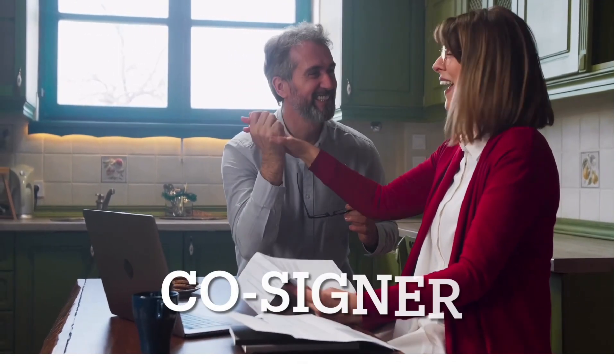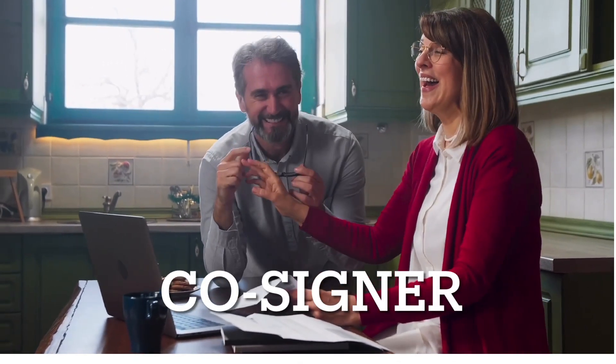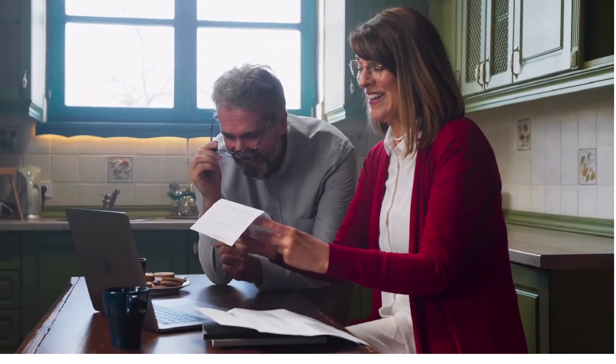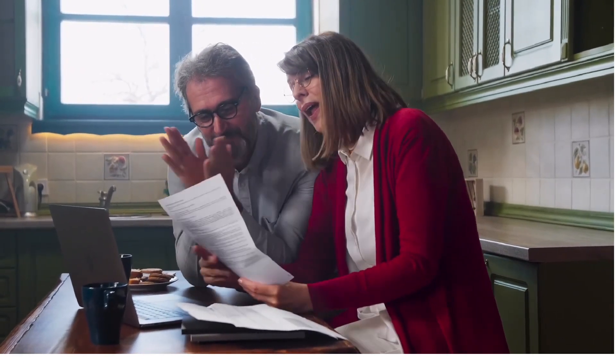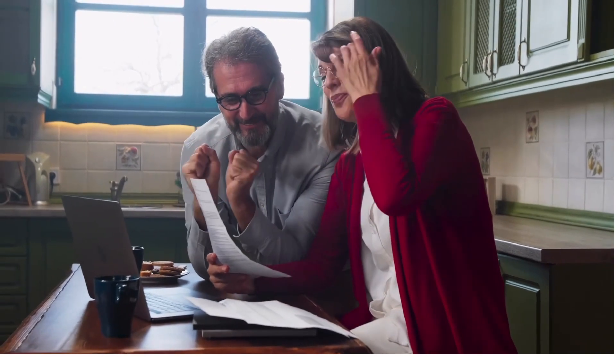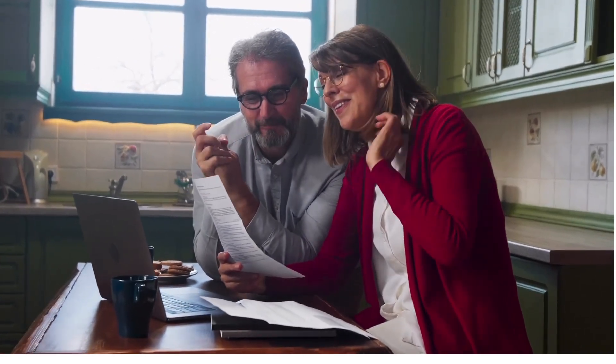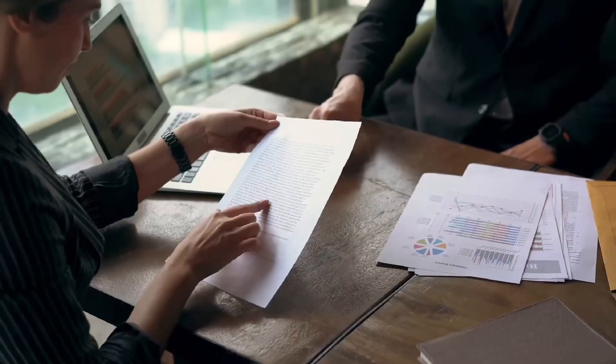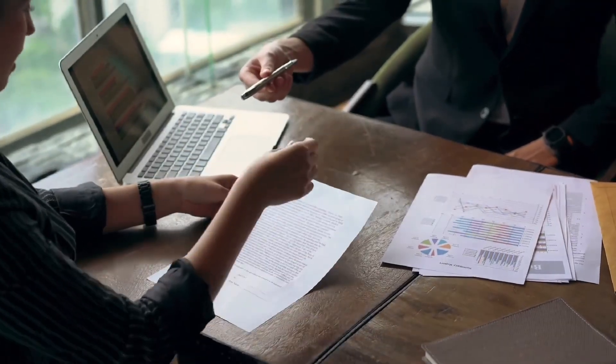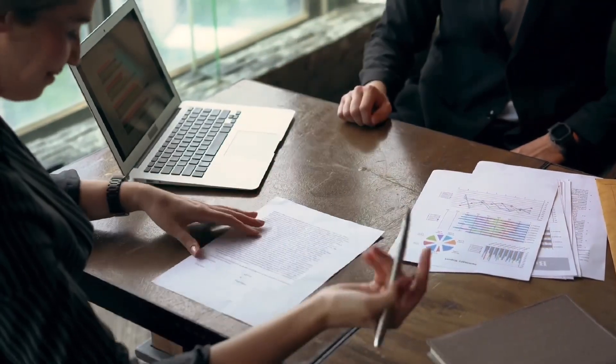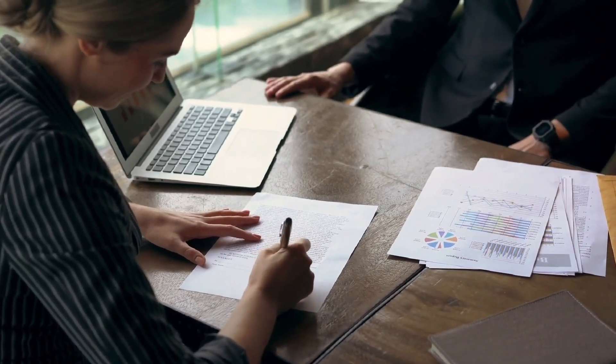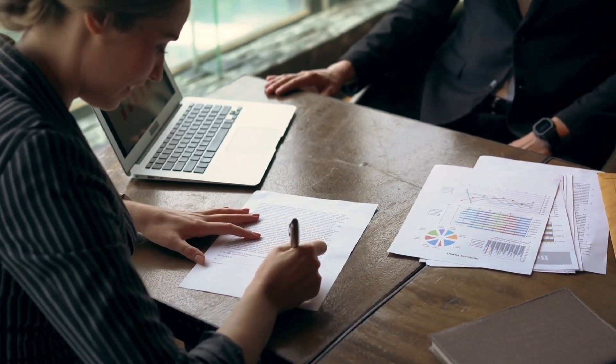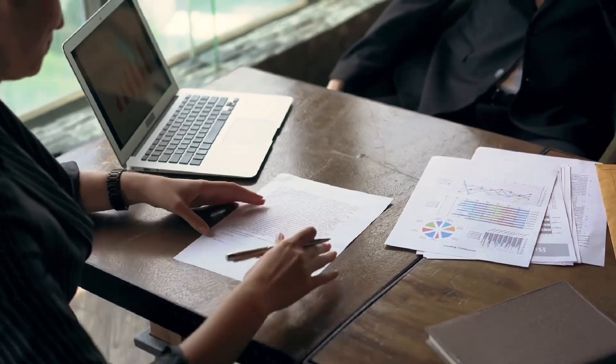Another option available to you is to get a US credit card with a cosigner. A new immigrant can apply for a credit card by using their family member or friend or spouse information as the cosigner on the account. They will be responsible for making the payments if you don't. So the cosigner will need to have an established US credit history, which can improve your chances of being approved for the credit card once you apply. But just make sure that the cosigner clearly understands what they're agreeing to.